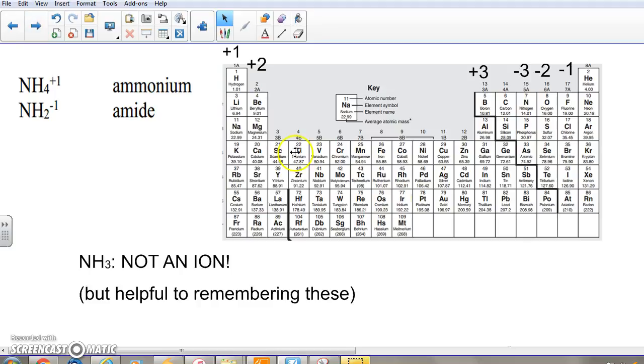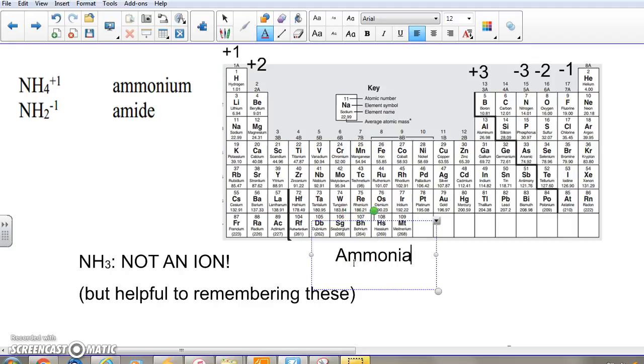NH3 is not an ion. It's not an ion at all. It is ammonia, the compound found in household cleaners, window cleaners, things like that. You probably would recognize the smell of ammonia.